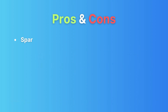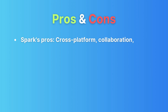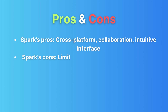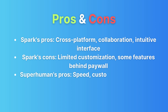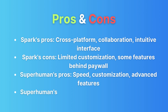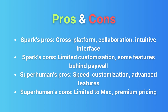And now let's look at Superhuman. The pros. Lightning-fast email performance sets the standard that power users who prioritize efficiency will appreciate. Extensive customization options give power users the ability to fine-tune their email experience to their exact specifications. Advanced features, including email tracking and AI-driven insights, elevate productivity to new heights. And now the cons. Currently confined to Mac users, which might limit its accessibility. Premium pricing may be considered steep by users on a budget.